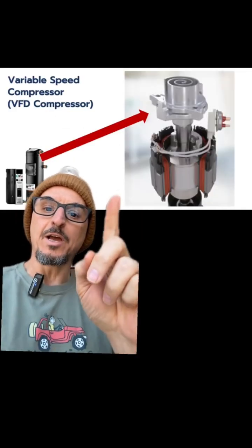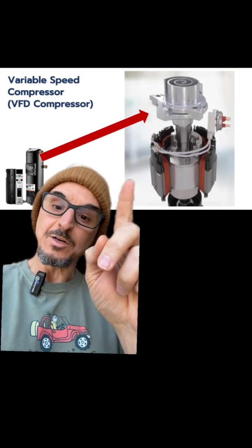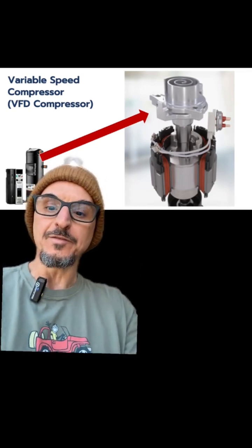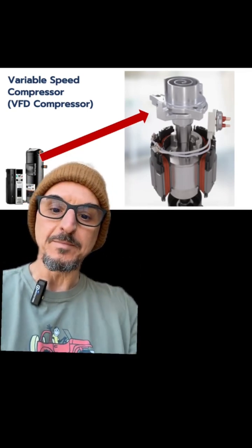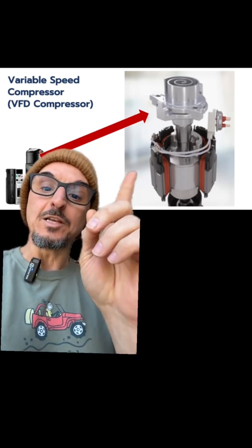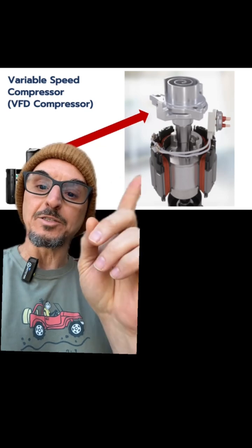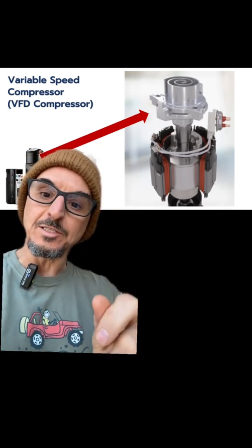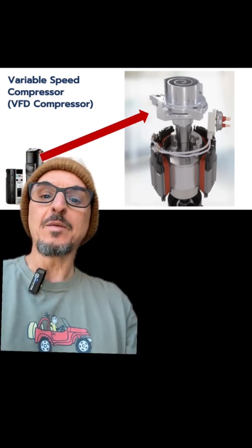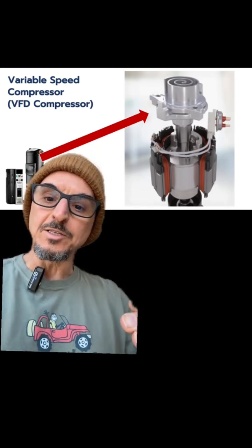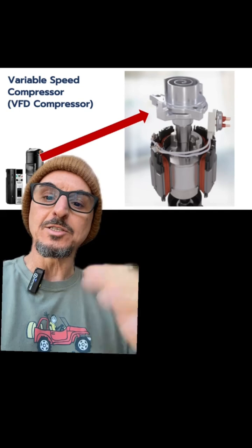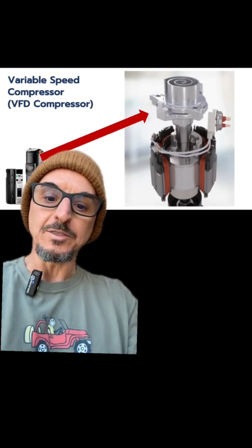Next we're going to look at the variable speed compressor, otherwise known as the inverter compressor or the VFD compressor. The main difference here is you're actually changing the speed of the compressor to match the capacity required. So if you needed 50% capacity, you would slow the compressor down to 50%. That's the main difference between this compressor and the digital compressor.